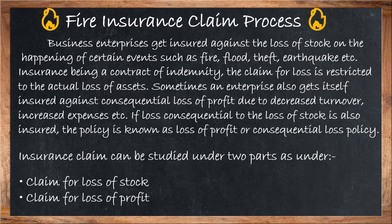There are two main policies to cover different losses. The first is loss of stock by fire — remember, this is only by fire, because in this chapter we are learning about fire insurance claim. The second policy is loss of profit by fire. If loss consequential to the loss of stock is also insured, the policy is known as loss of profit or consequential loss policy.